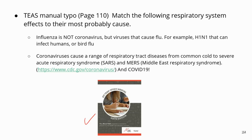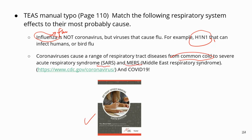If you're using this particular version of the TEAS study manual, there is a typo on page 110. It mentions pathogens for the respiratory system, specifically some viruses. Influenza, which causes flu, is not a coronavirus — it is a type of virus, but not a coronavirus. Coronaviruses usually cause other respiratory tract diseases, such as the common cold, SARS, MERS — those are all caused by coronaviruses, including COVID-19, which is caused by a novel coronavirus.